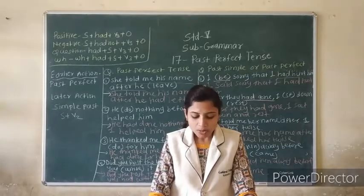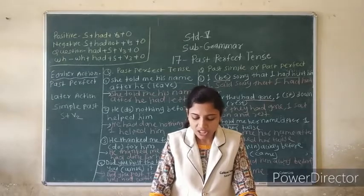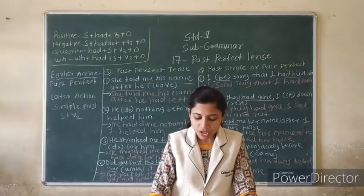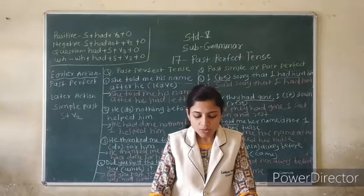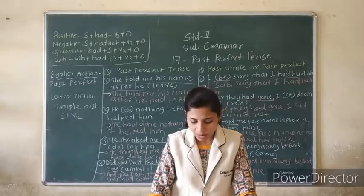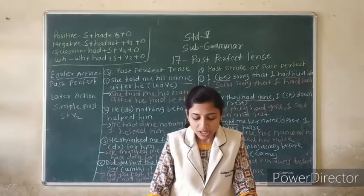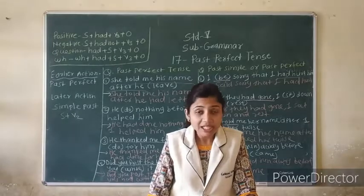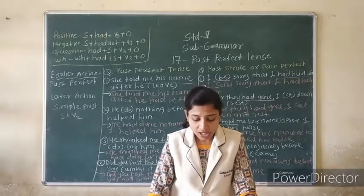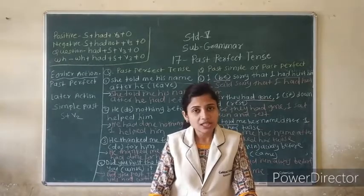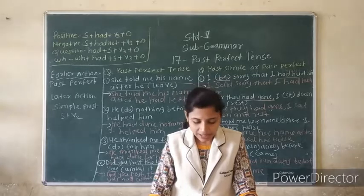Thirteenth: 'Before help reached them, one girl had died.' First action: the girl died. So: 'Before help reached them, one girl had died.'